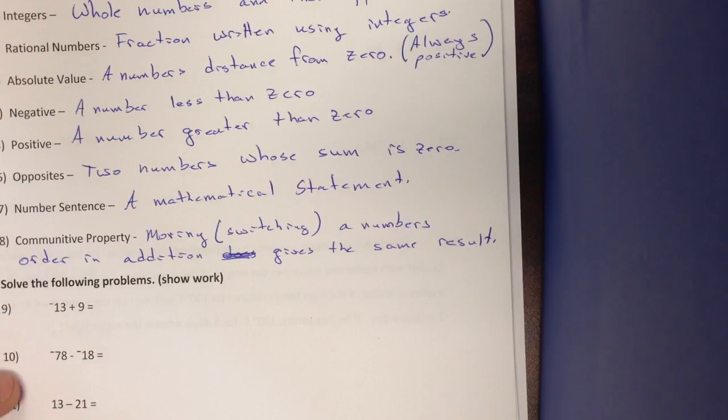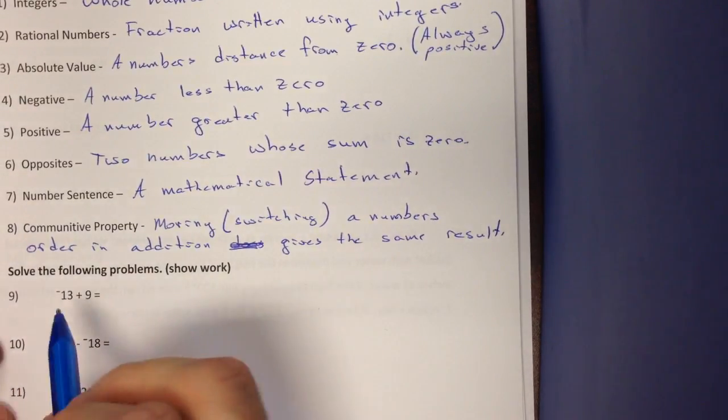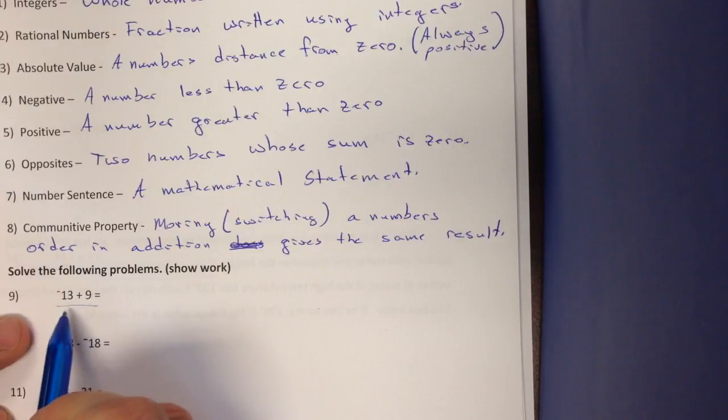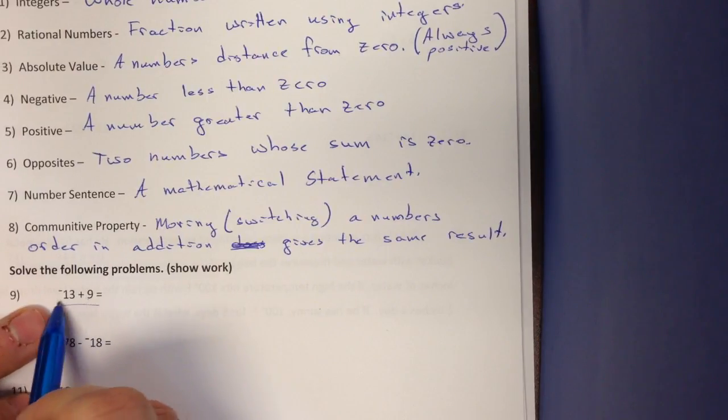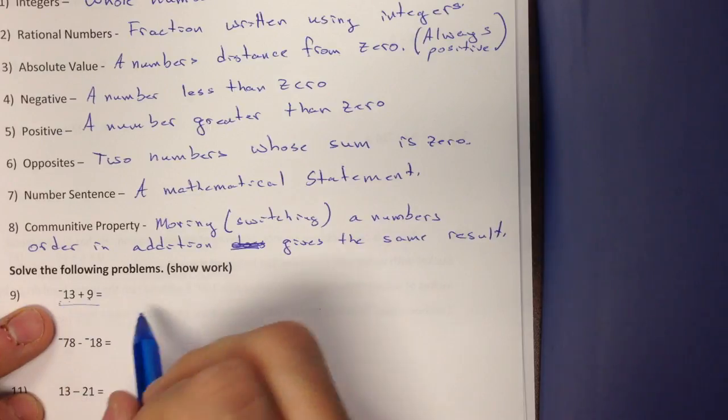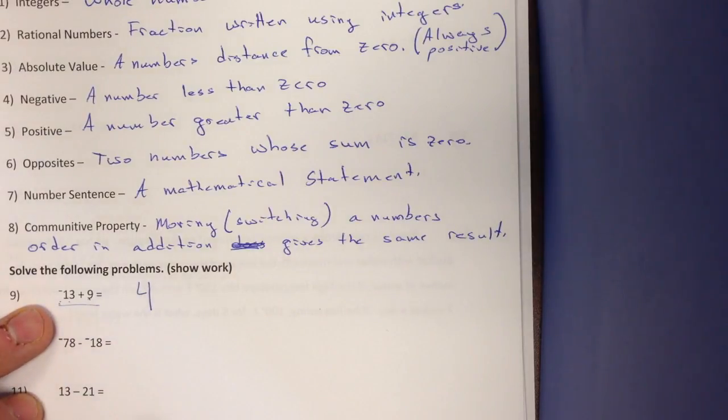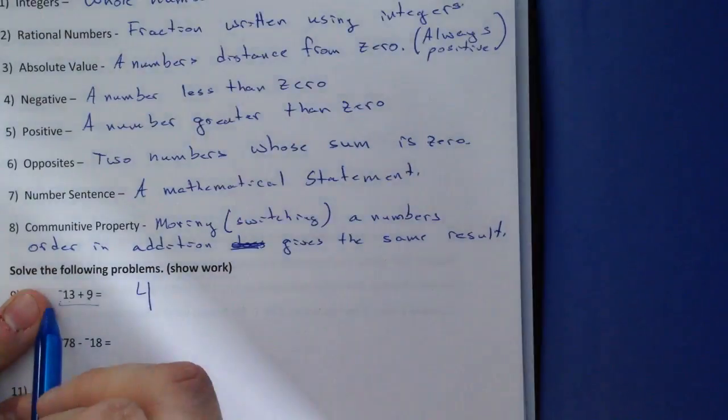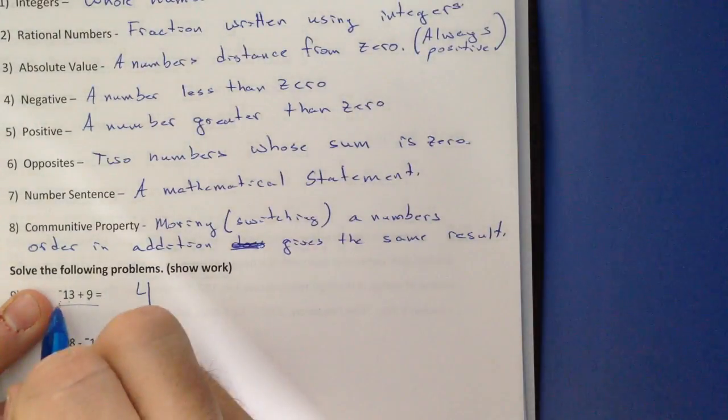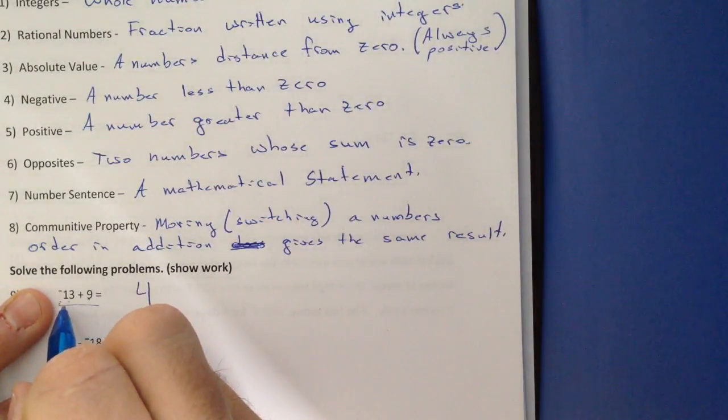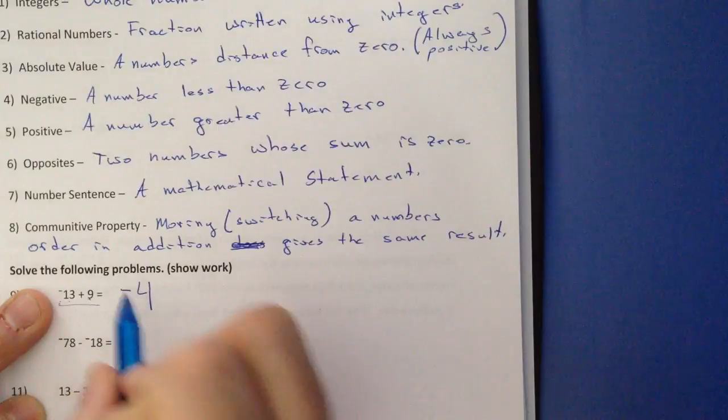Now, solve these problems. And so we have our first rule for adding integers. If the signs are different, we're actually subtracting. So 13 minus 9 is 4. Keep the sign of the larger absolute value. Negative 13 is further from 0 than 9. So my answer is negative 4.